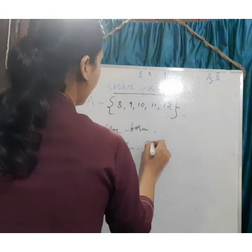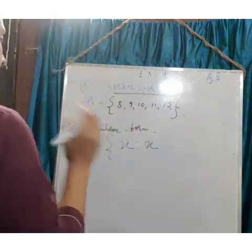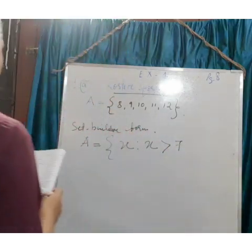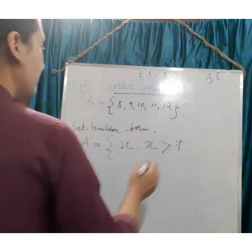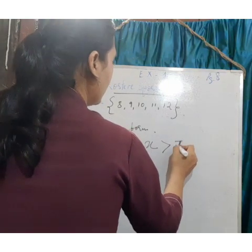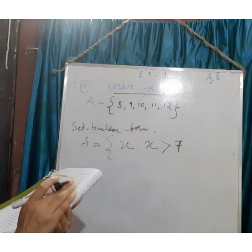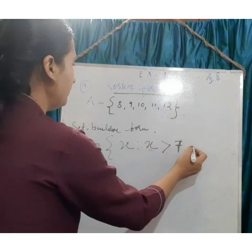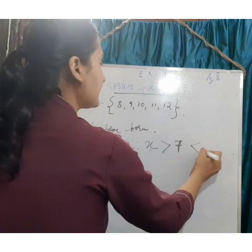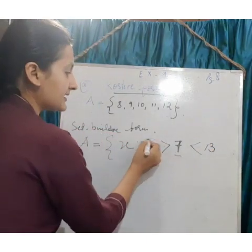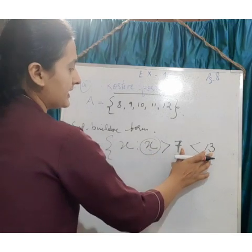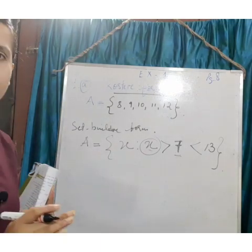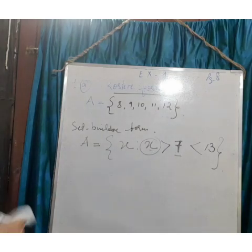Now for the set builder form: Set A = { x | x is a natural number, x > 7 and x < 13 }. Sorry for my earlier mistake — it should be greater than 7, not less than 7. So x should be greater than 7 but less than 13. This is how we write in set builder form. I hope that is clear.